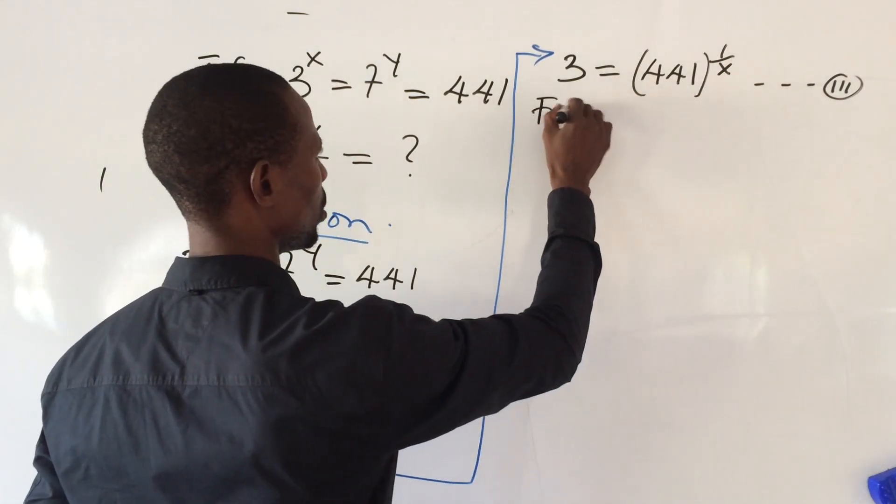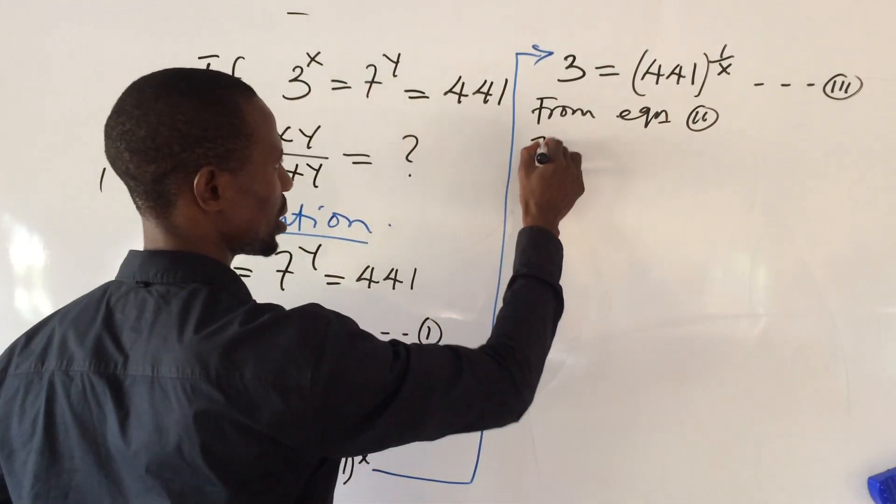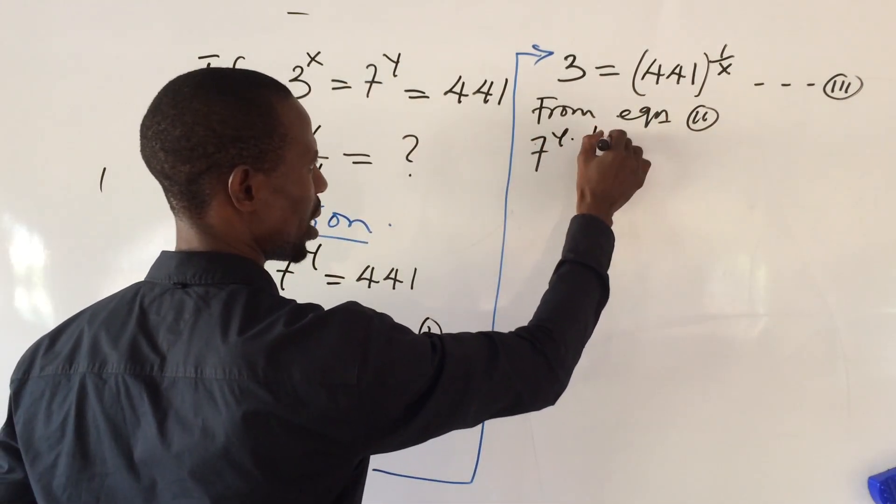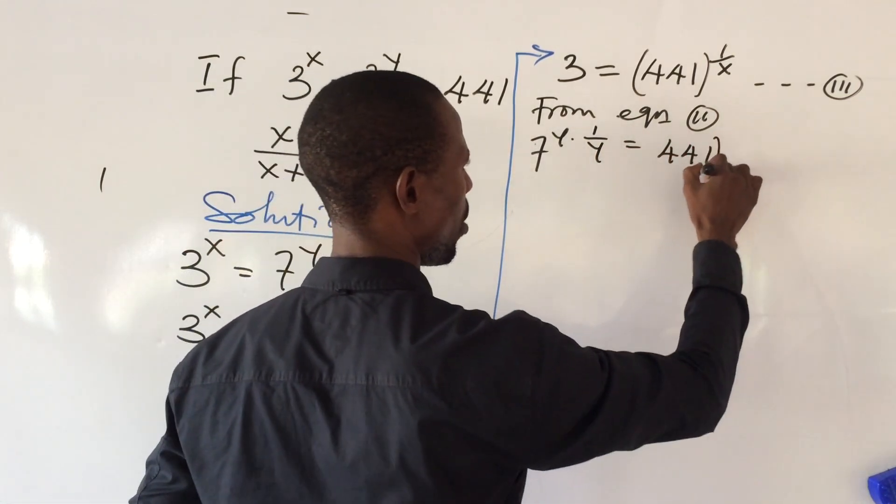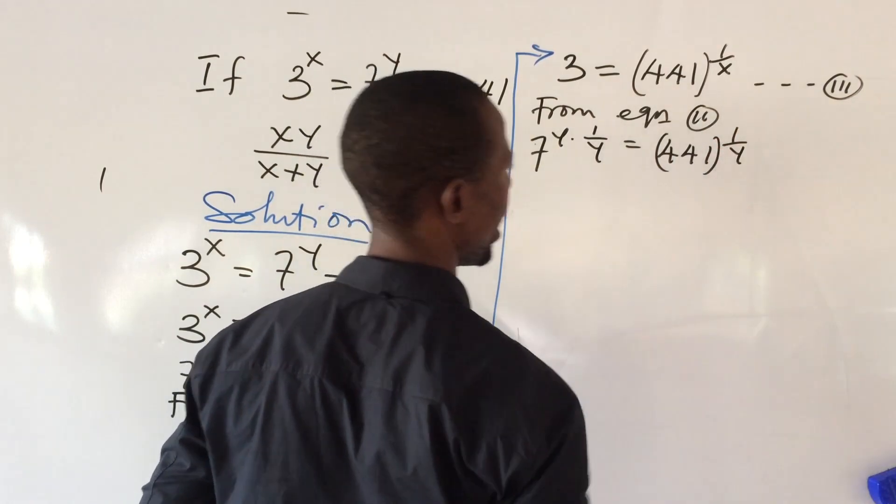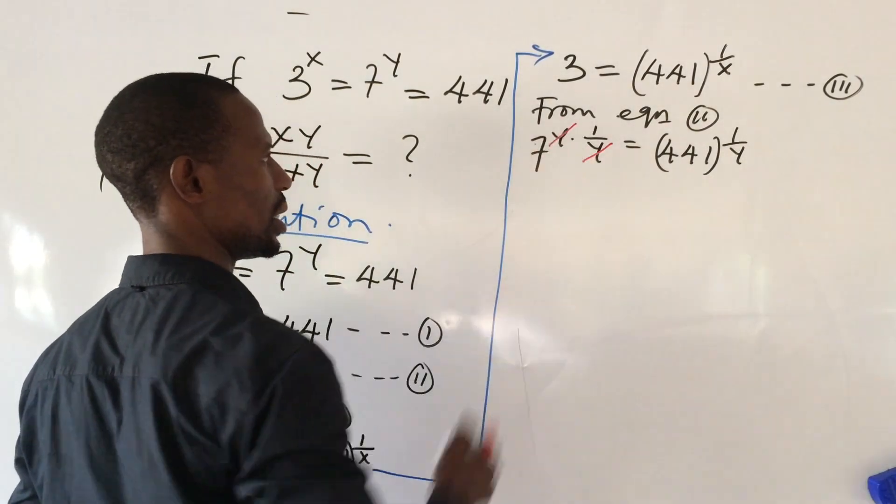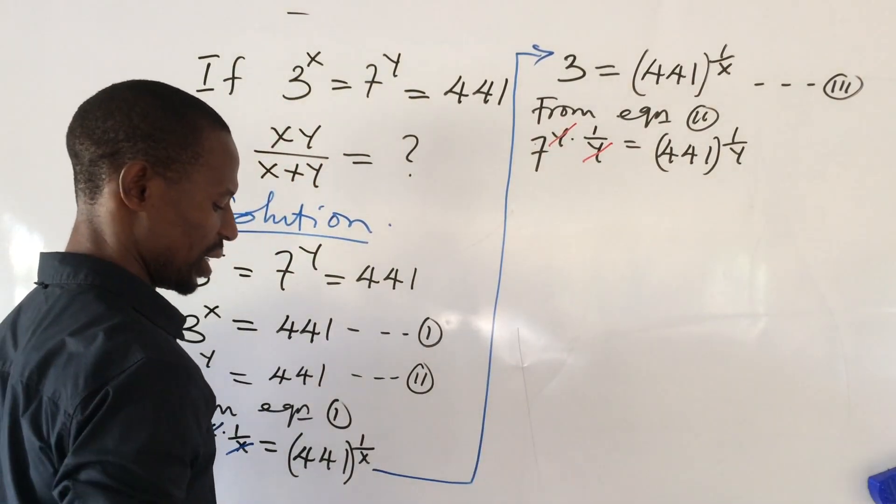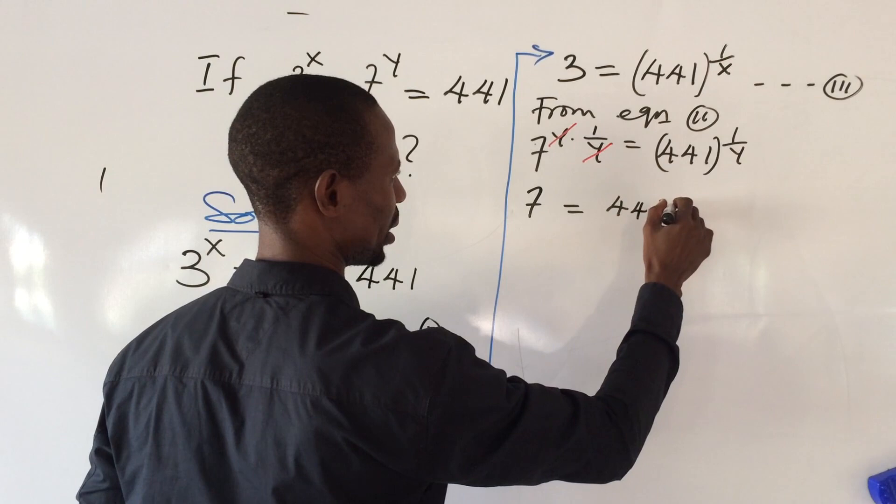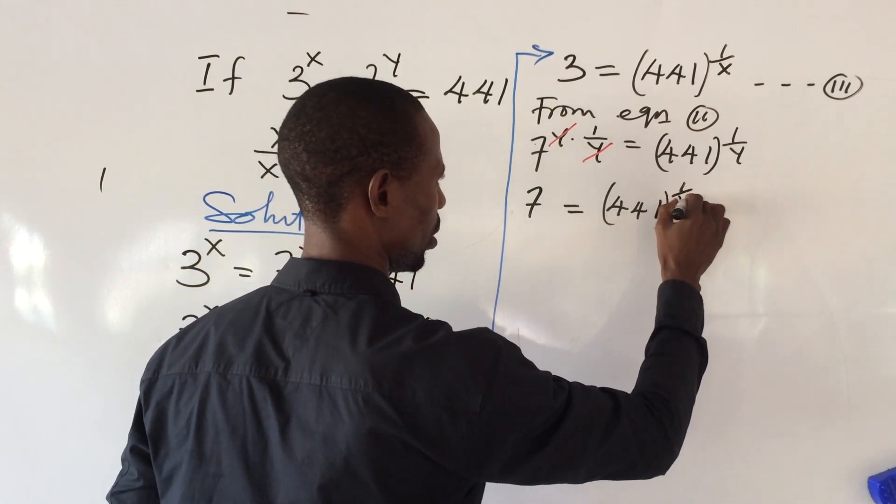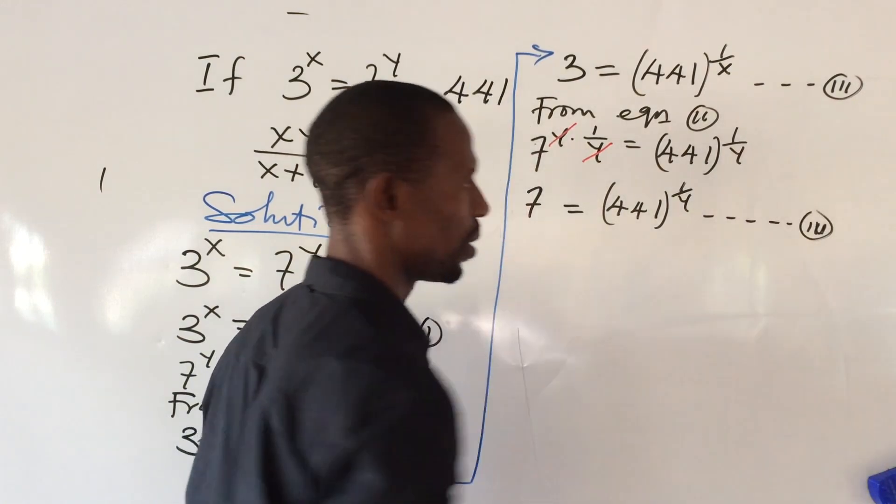So from equation 2, from equation 2, we do same thing, which is 7 to the power of y times 1 all over y equal to 441 to the power of 1 all over y. Same thing will also happen here too. So we cancel y here. So if we cancel out, we are now left with 7 equal to 441 to the power of 1 all over y. So let's give this our equation 4.